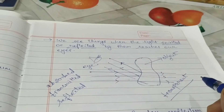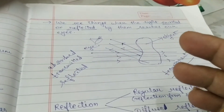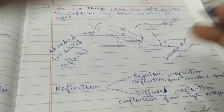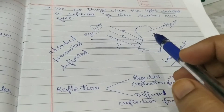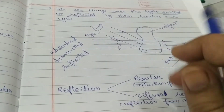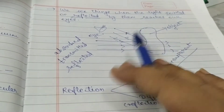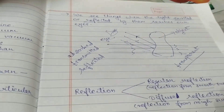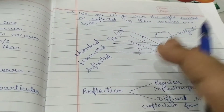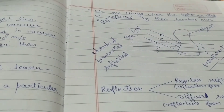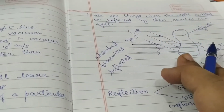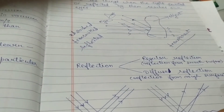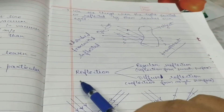Objects through which maximum light passes are called transparent objects — for example, a glass sheet through which you can see. But a notebook is not transparent; light from the tube light falls on it and the light reflected from it reaches my eyes, which is why I can see it. Absorption will be studied in another chapter, so we leave it for now.